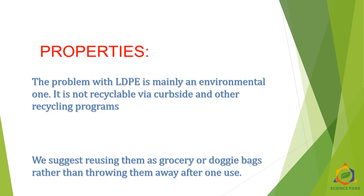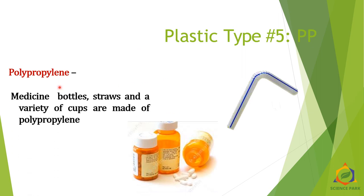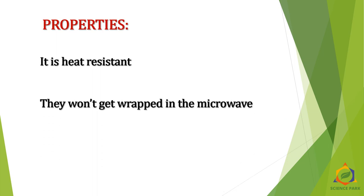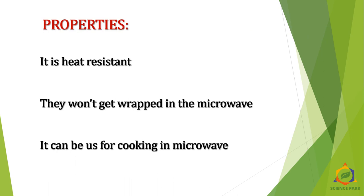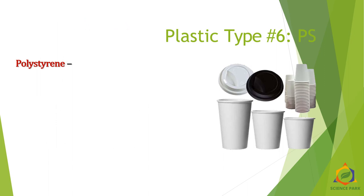Type 5 is PP — polypropylene. Medicine bottles, straws, and a variety of cups are made out of polypropylene. It is safe and recyclable. A key property is heat resistance — polypropylene items won't get warped in the microwave. It can be used for cooking in the microwave, though that is not strongly advised.